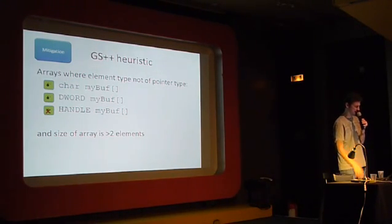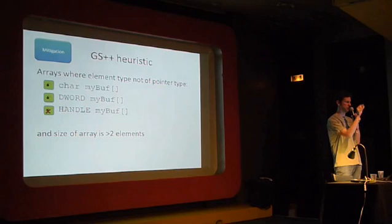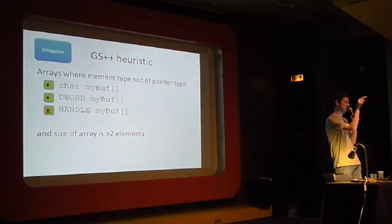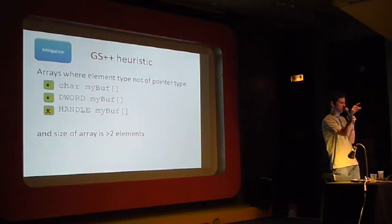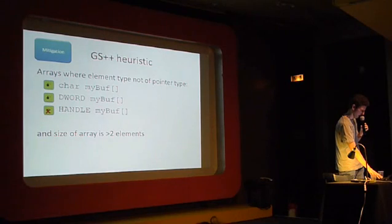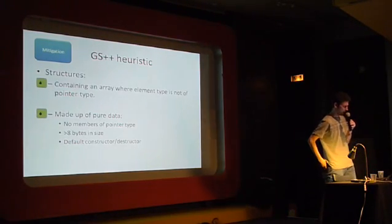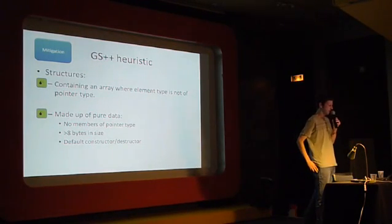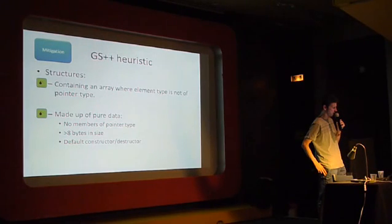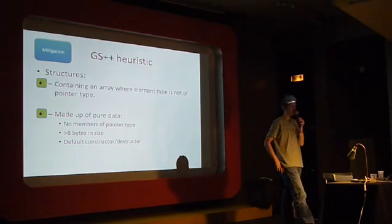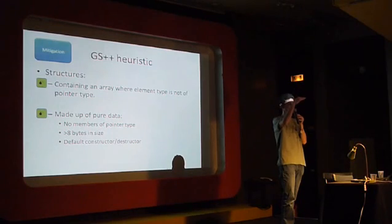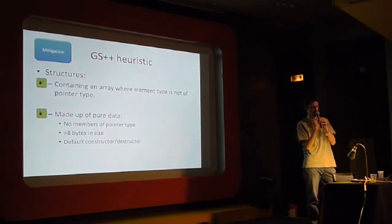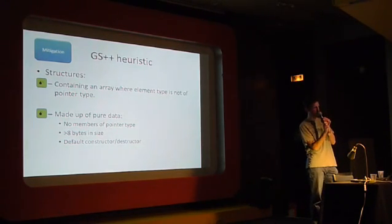We also decided not to bother protecting tiny arrays, because there are a lot of tiny two-element arrays that aren't really being used as arrays — they're all accessed via index zero and index one and there's never really a bounds problem. For structures, we use a similar principle: any structure containing an array where the element type is not a pointer type. So as in the ANI case, if you have a structure that's just a whole bunch of DWORDs, a whole bunch of data, that will be protected. We also chose not to protect structures smaller than eight bytes in size.